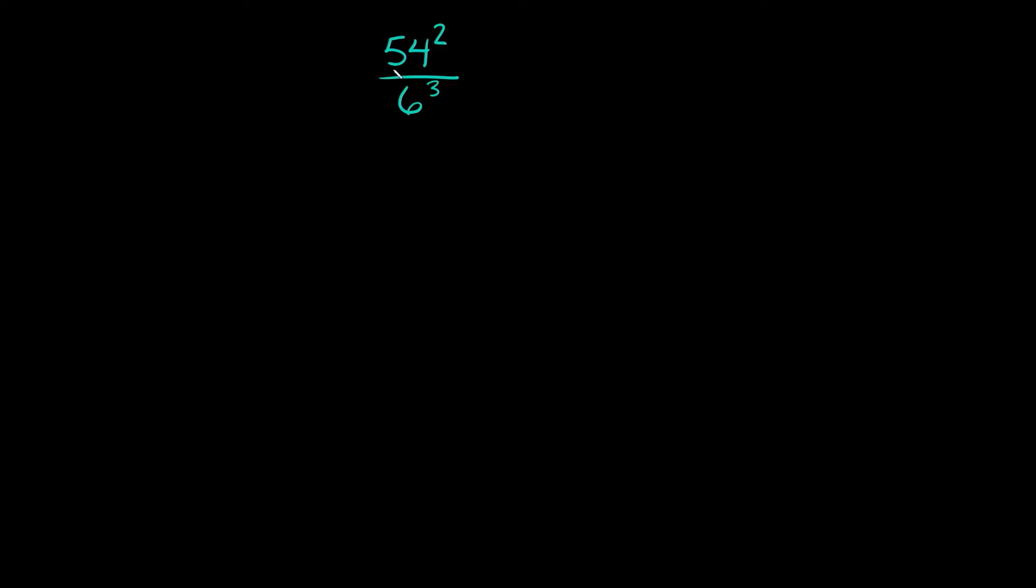What's up you freaking geniuses? So in order to divide numbers that have different bases and different exponents, one thing we can do is actually break down the exponents. Specifically, you want to break down the bigger exponent so it matches the smaller one. How can we do that?